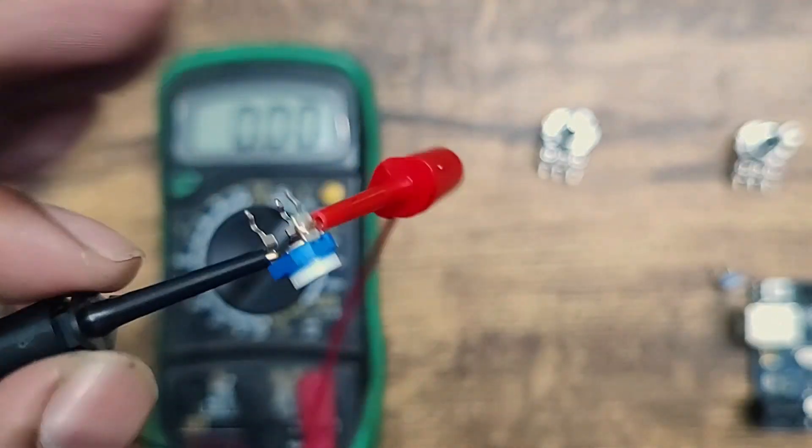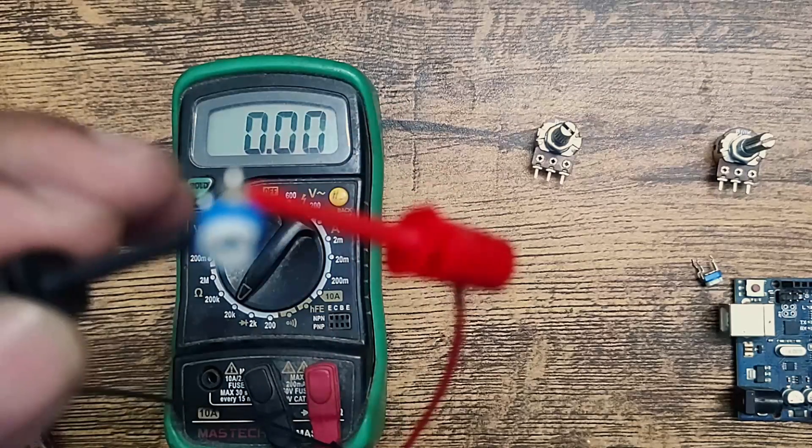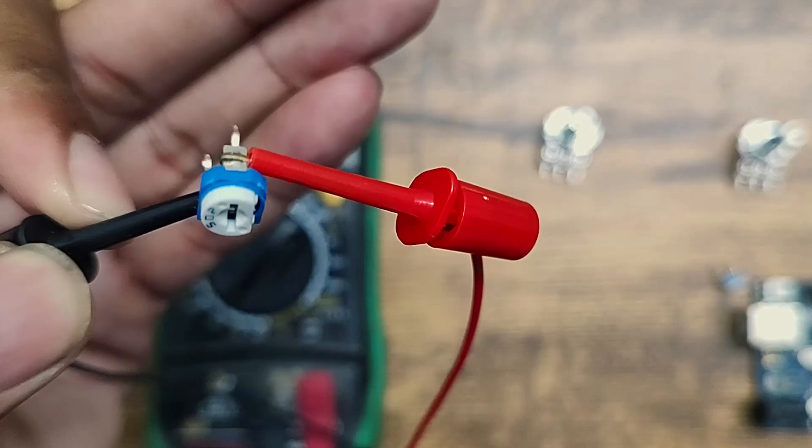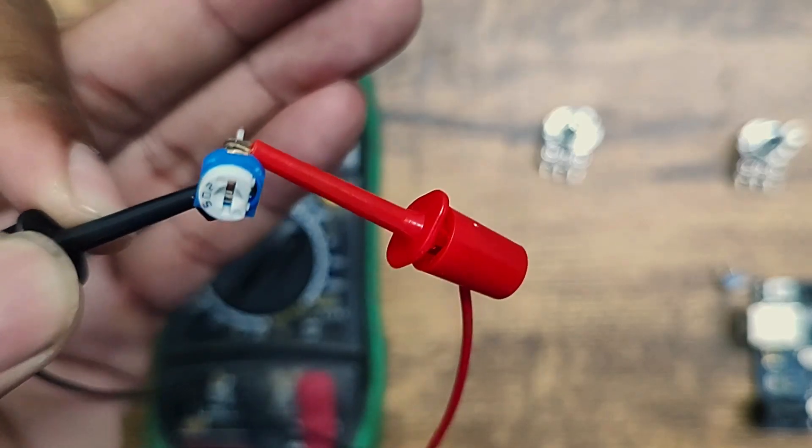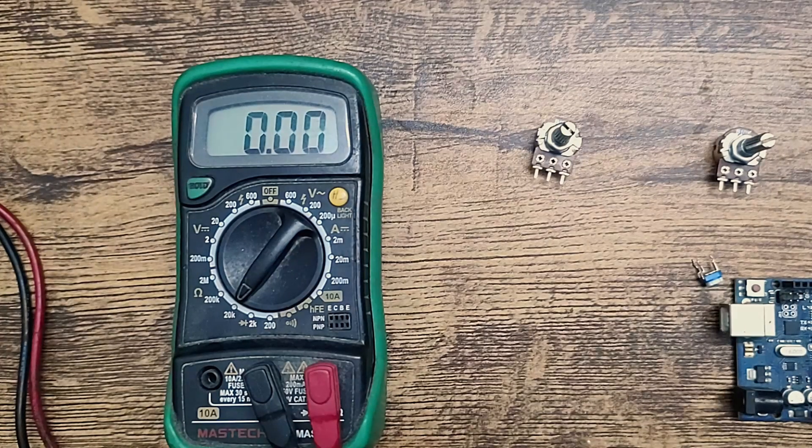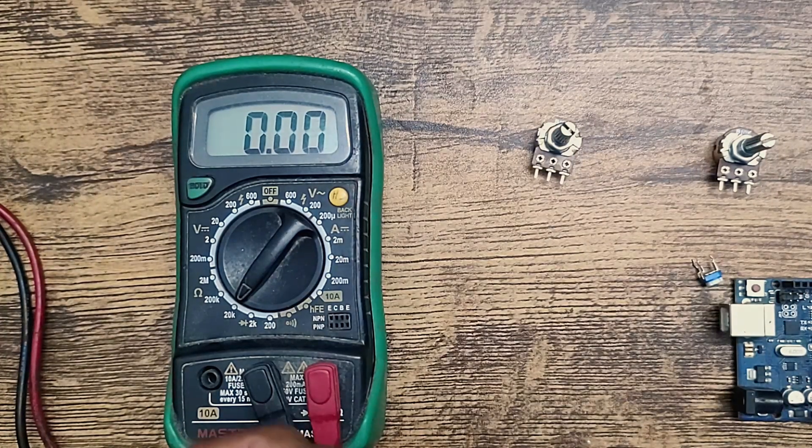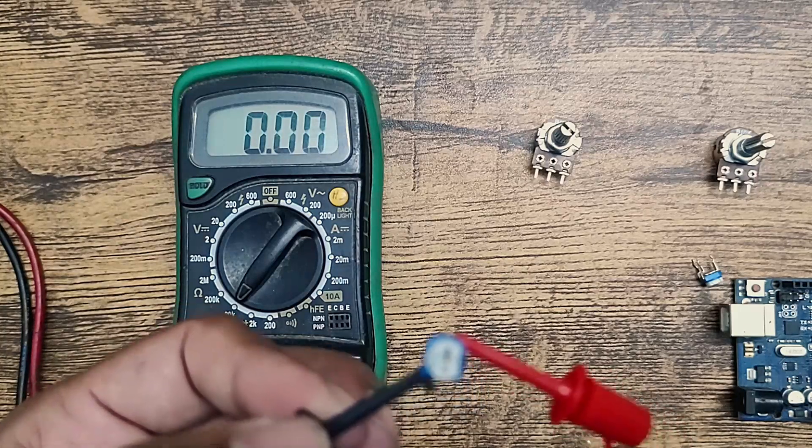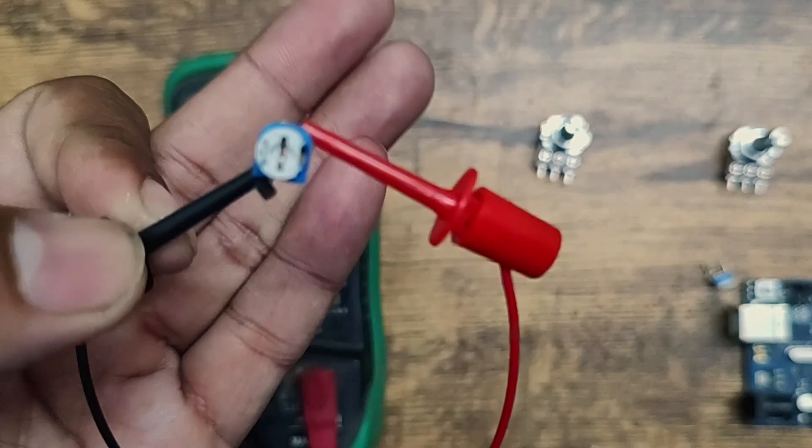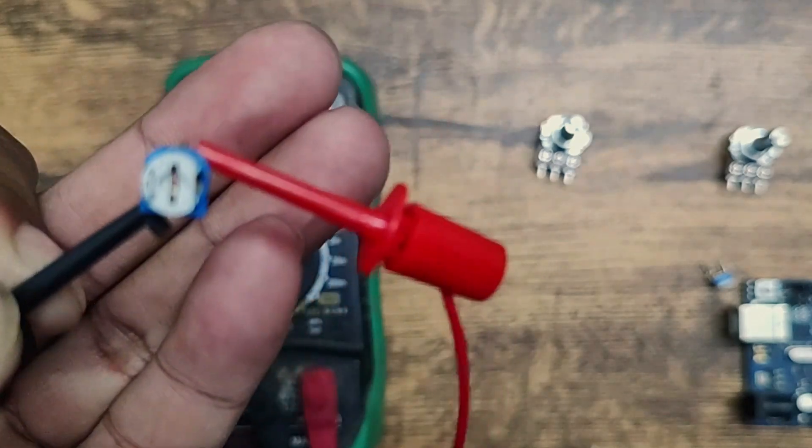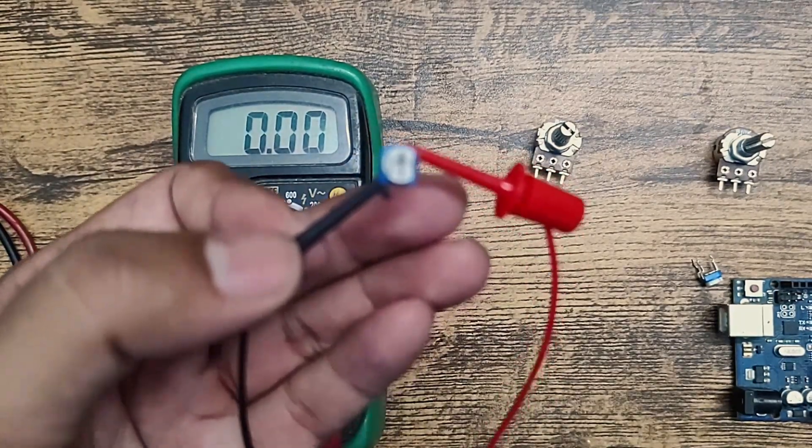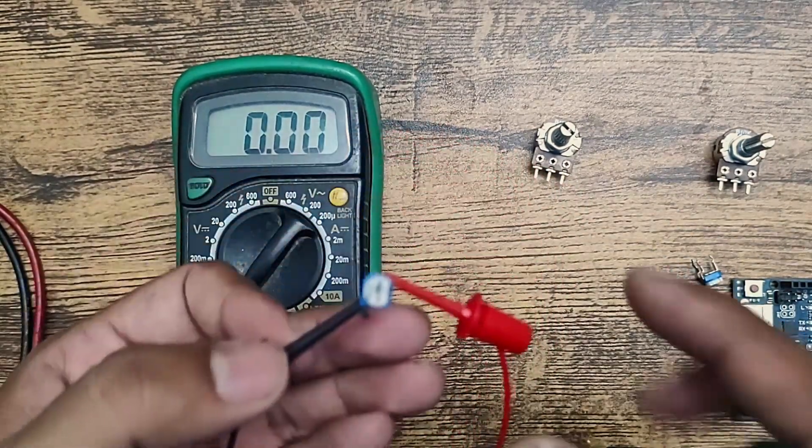Here you can see I have connected the first and the center pin of that small one to the wires, to the multimeter. I have set the multimeter value to 20k because the 10k was the maximum value I have with the potentiometer. So you can see this is connected. Now I need a screwdriver to rotate it.